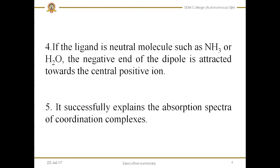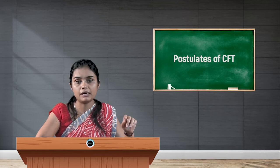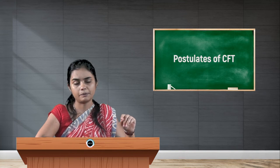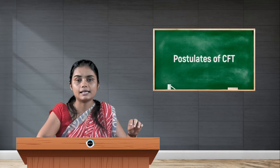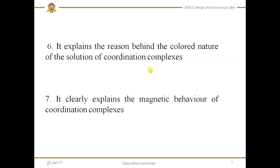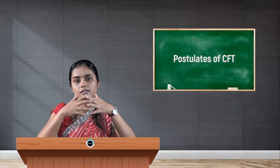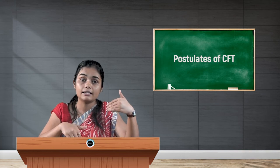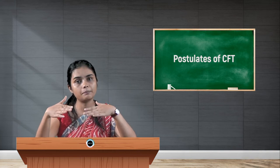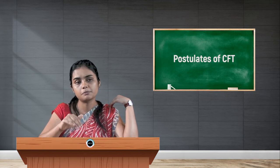The fifth postulate says that CFT successfully explains the absorption spectra of coordination complexes, which VBT failed to explain. It successfully explains the absorption spectra. The sixth postulate says that it explains the reason behind the coloured nature of coordination complex solutions. The coloured nature of coordination complexes is explained by this theory, which VBT failed to explain. We know transition metal complexes exhibit colour — for example, potassium permanganate and potassium dichromate are coloured in nature, and that was failed to explain by VBT.